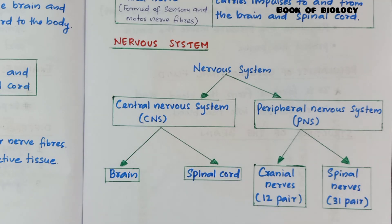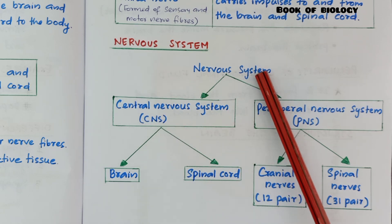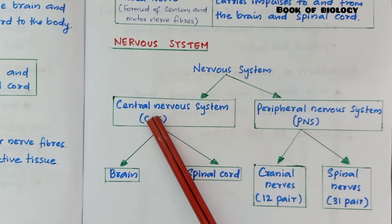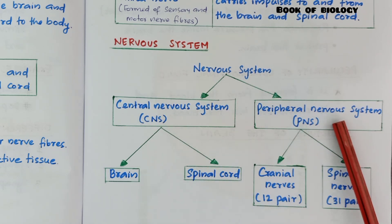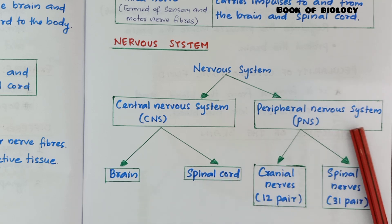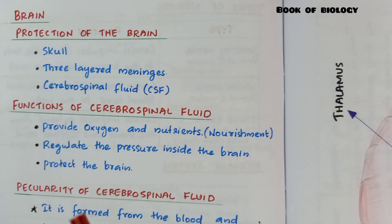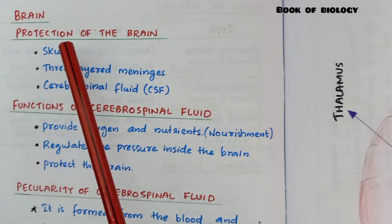Next: nervous system. The nervous system can be classified into two: central nervous system and peripheral nervous system. The central nervous system includes two organs — brain and spinal cord. The peripheral nervous system includes cranial nerves — 12 pairs — and spinal nerves — 31 pairs.